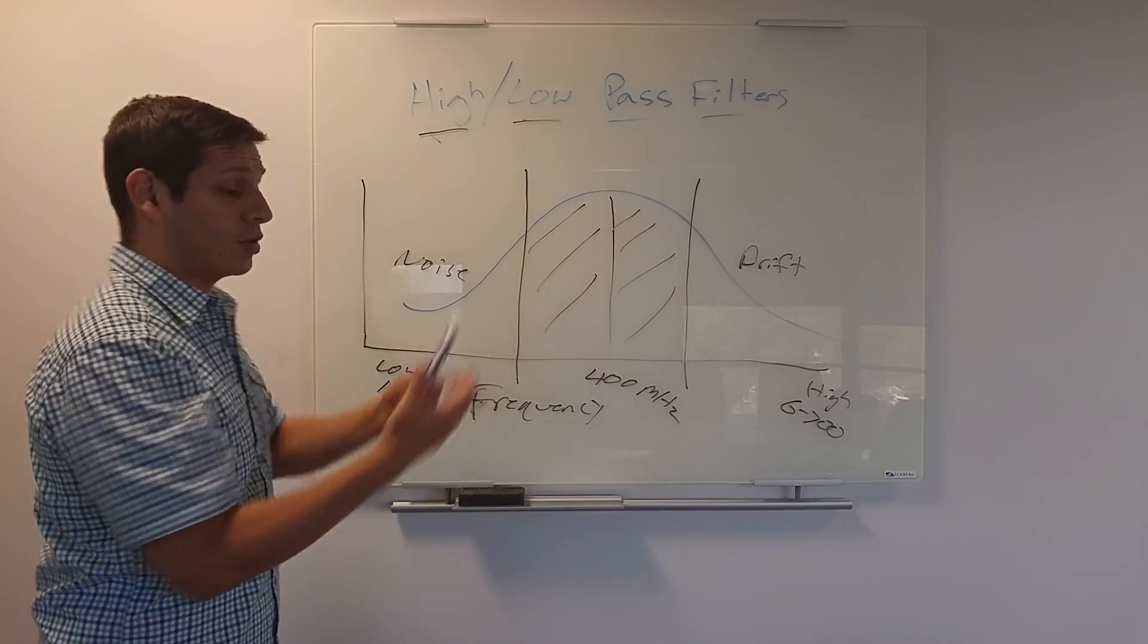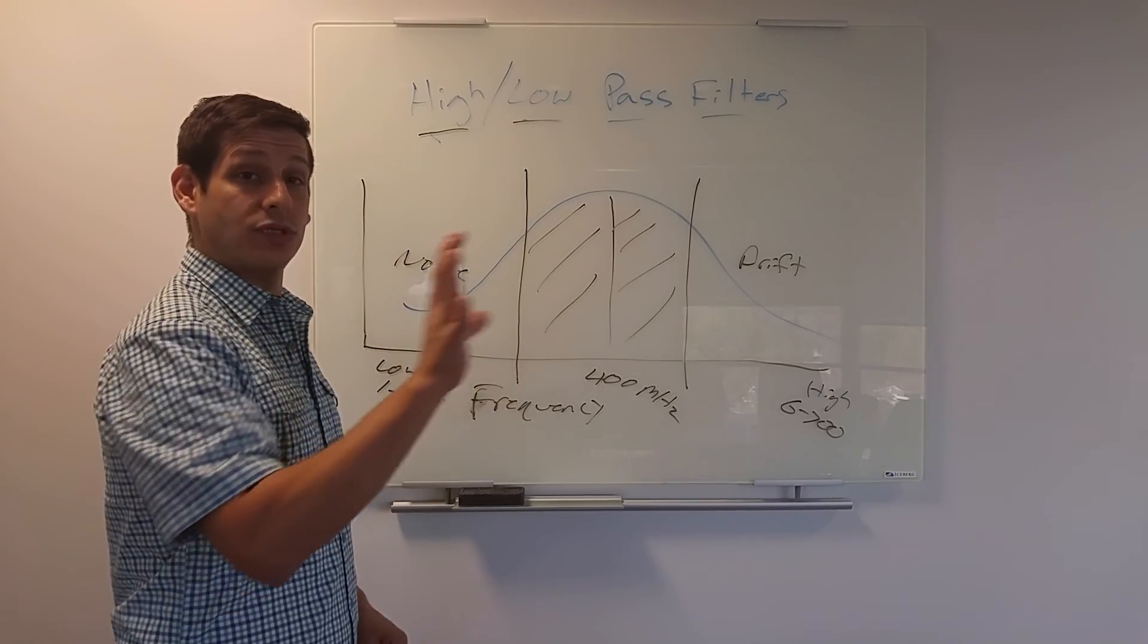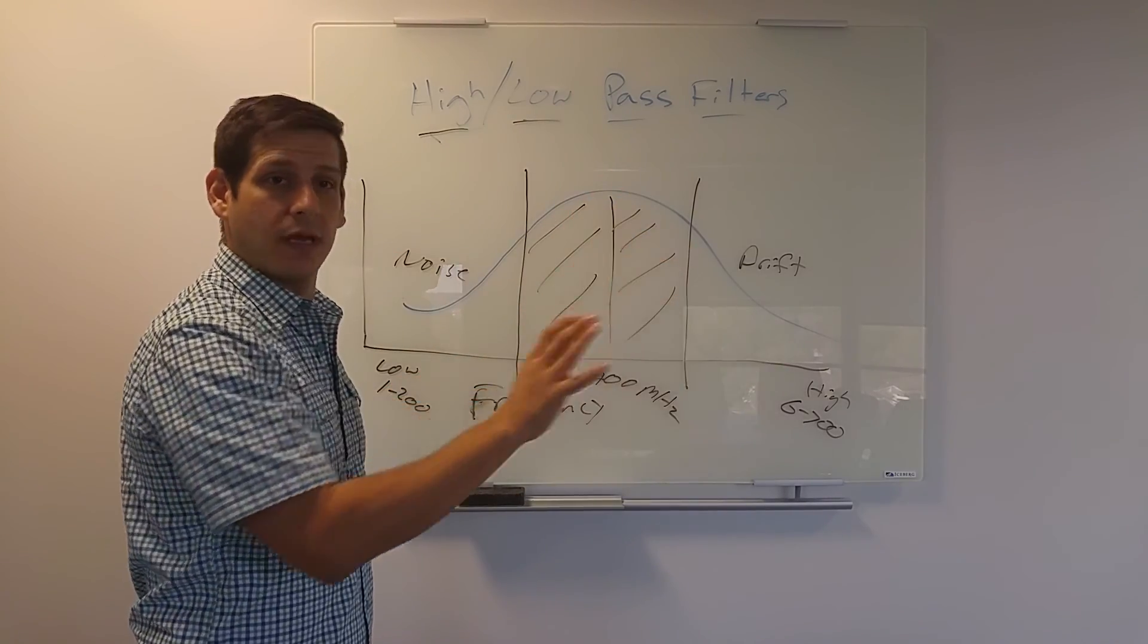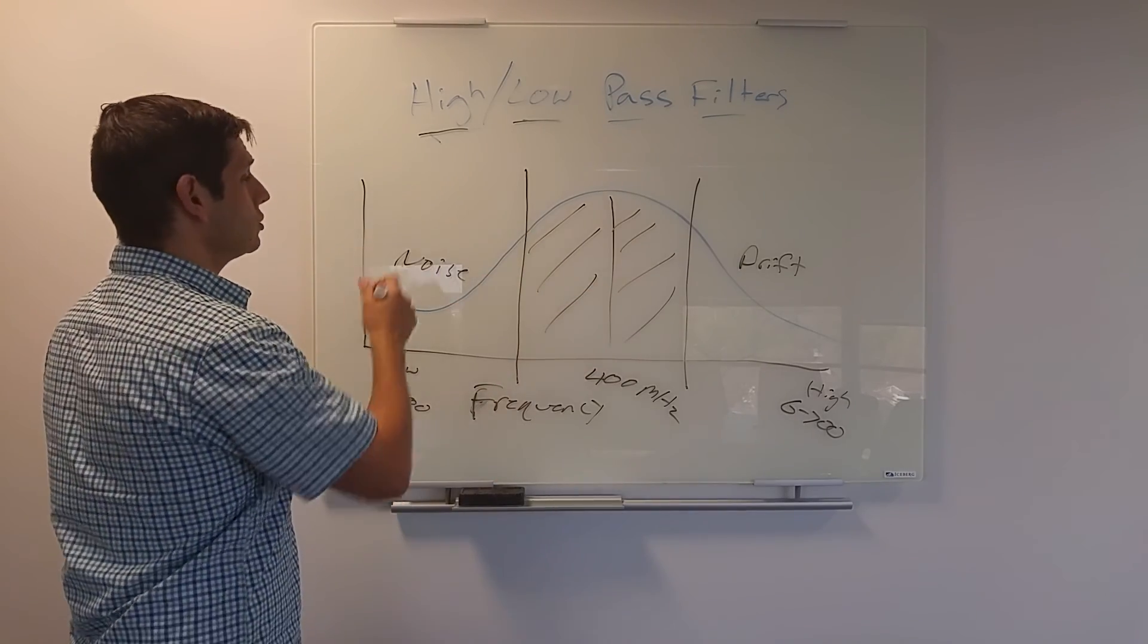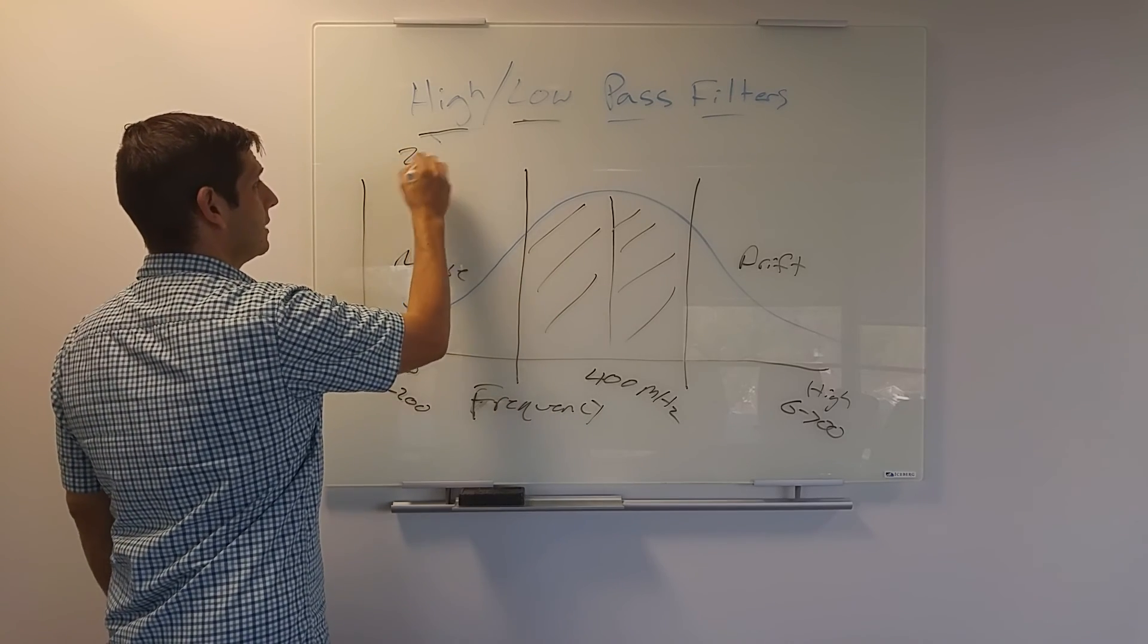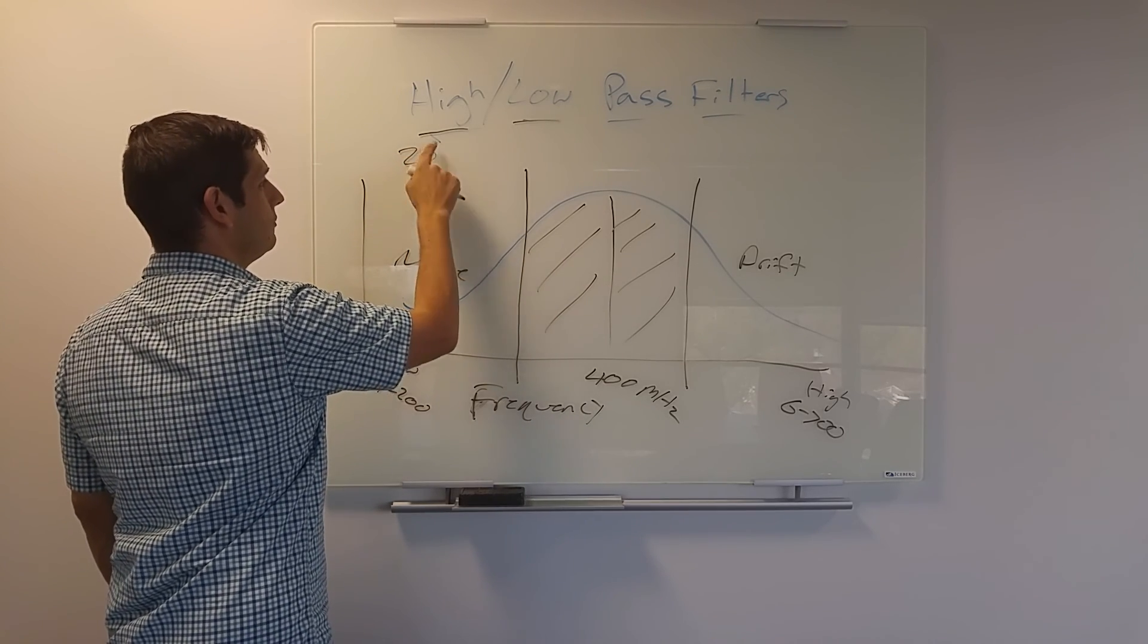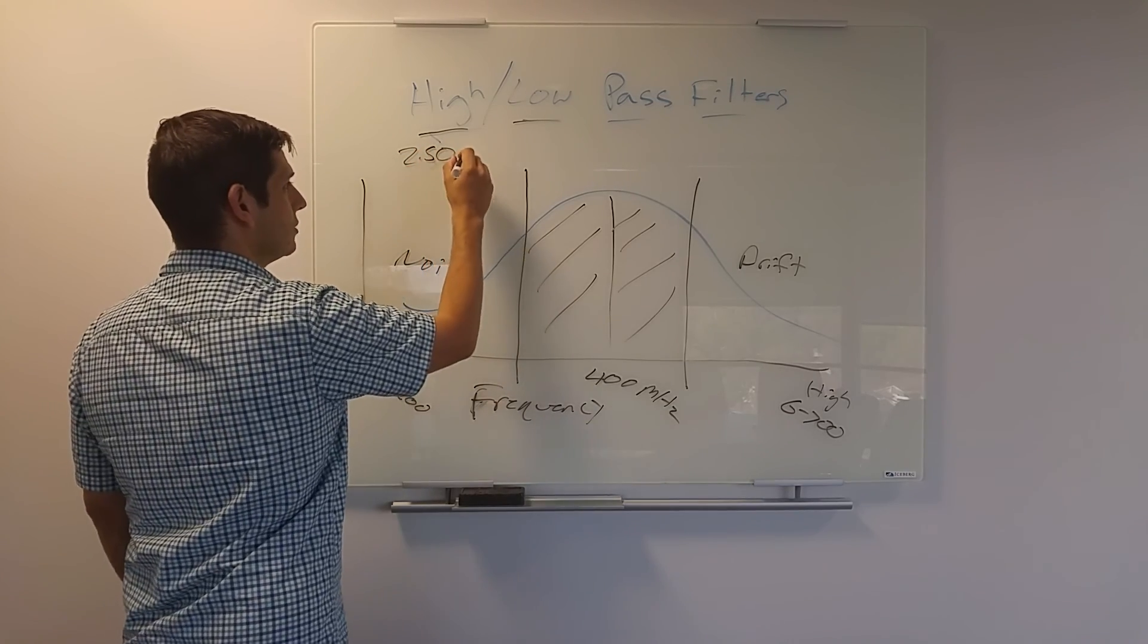So let's say you input, right? So on your instrument or your post-processing software, they're going to give you the ability to input some sort of megahertz value, some frequency value. So let's say you say, all right, high pass is going to be 250 for argument's sake, 250 megahertz.